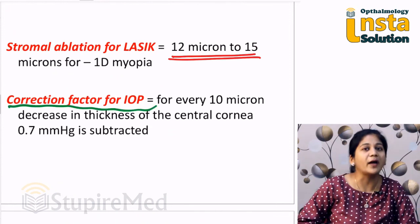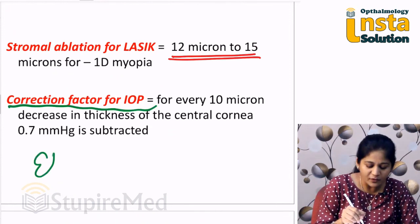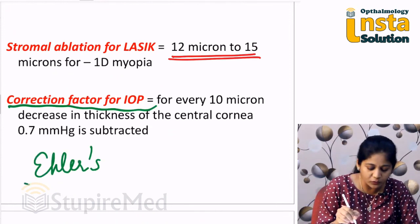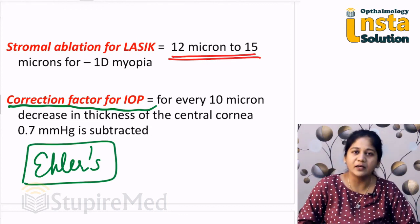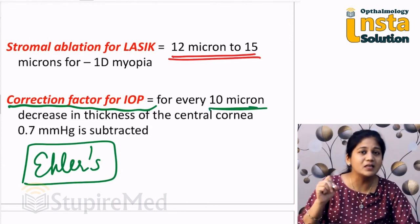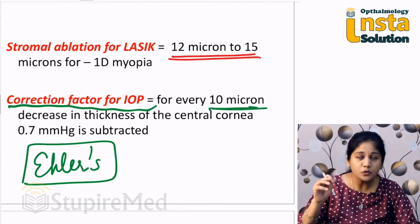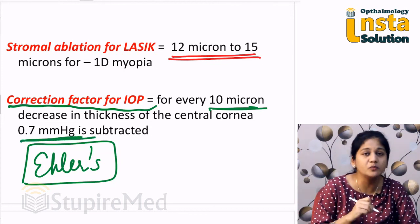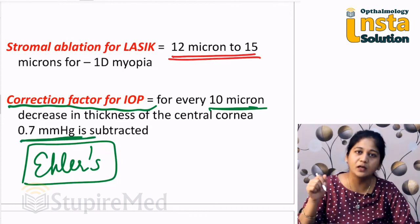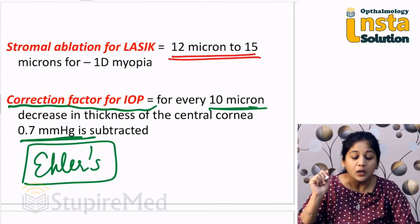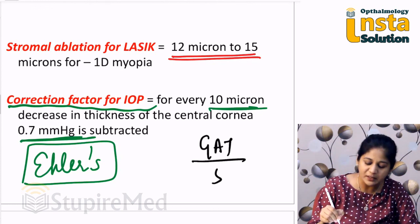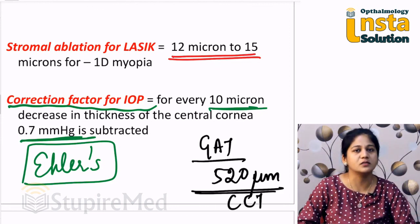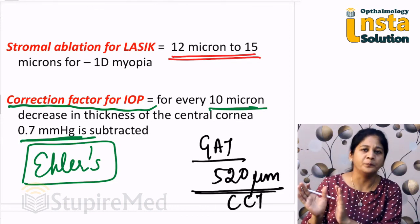Now this is very important — the correction factor. We commonly use the Ehlers correction. Ehlers found that for every 10 microns decrease in thickness of the central cornea, you should subtract 0.7 mmHg from the IOP measured on Goldman Applanation Tonometer. This is because Goldman Applanation Tonometer has been standardized for approximately 520 microns of central corneal thickness.